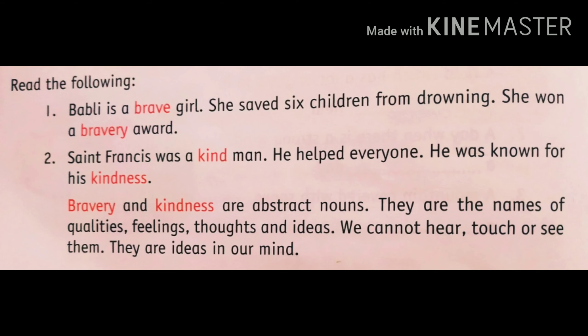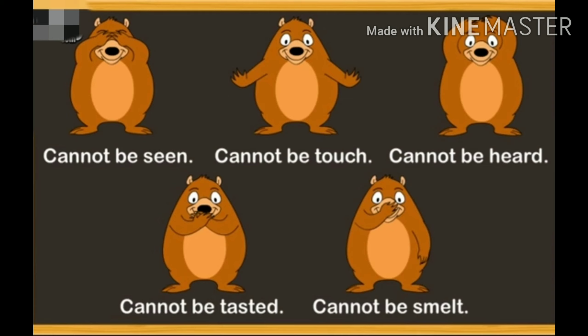What is abstract noun? In this paragraph you read two words, bravery and kindness. These are special words. The word bravery refers to things that we think or feel. Same as the word kindness refers to things that we think or feel. These words tell us about things we cannot see, cannot touch, cannot hear, cannot taste and cannot smell.